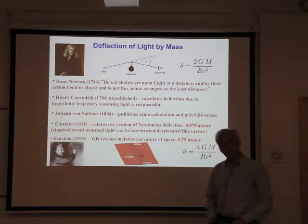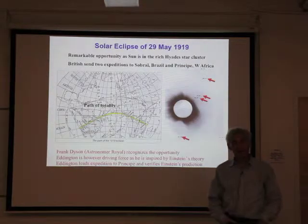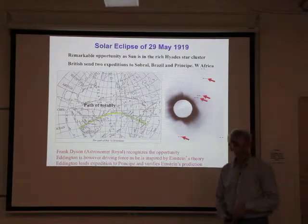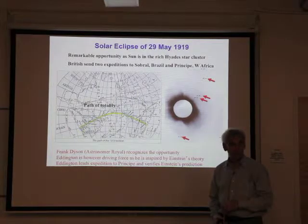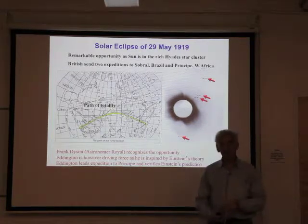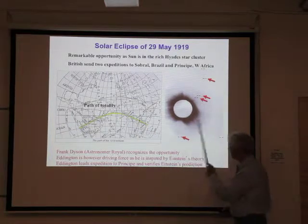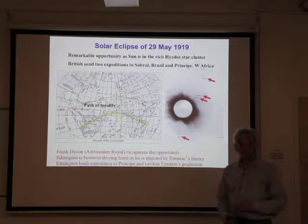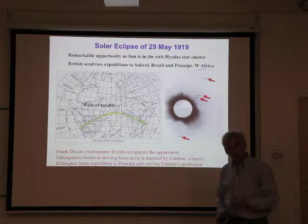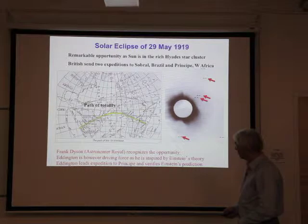Einstein tried very hard to get observers to verify this. How do you measure the deflection of light by a massive object? You use an eclipse, because you have stars near the sun's limb that you would otherwise not be able to see except at the time of an eclipse. A very famous British astronomer, Eddington, went to the island of Príncipe off the west coast of Africa. This is the actual photograph he took at the time of the famous eclipse in 1919. He verified this deflection, including the factor of 4 that Einstein predicted. After that moment, Einstein became a very famous scientist.